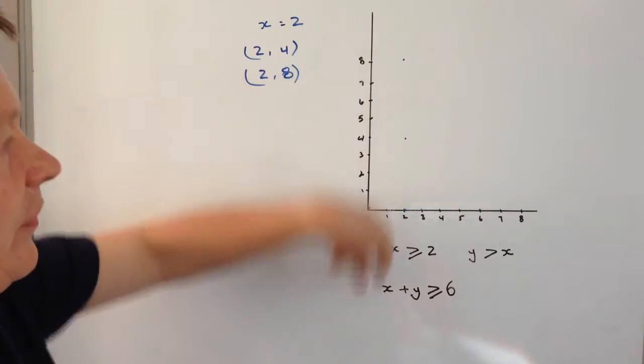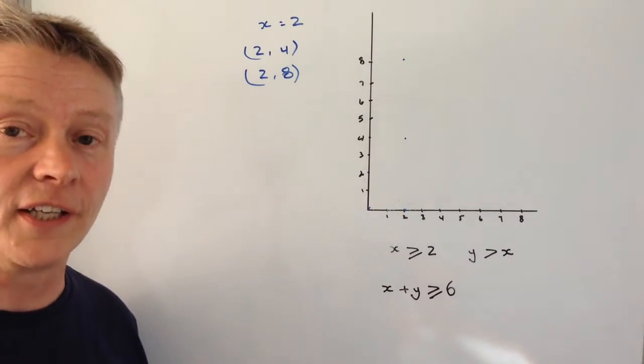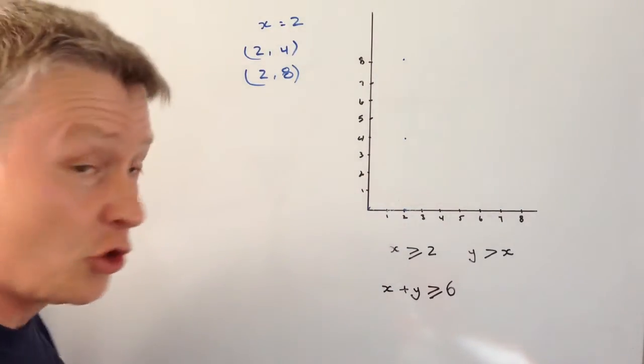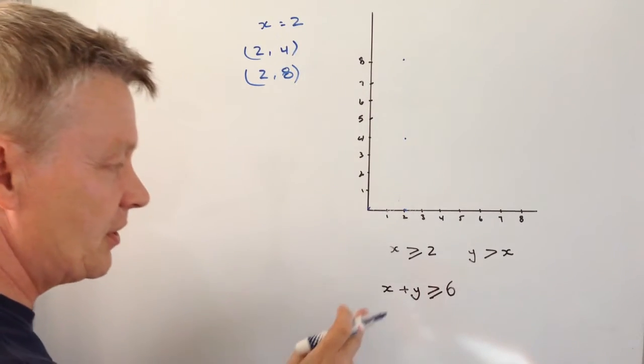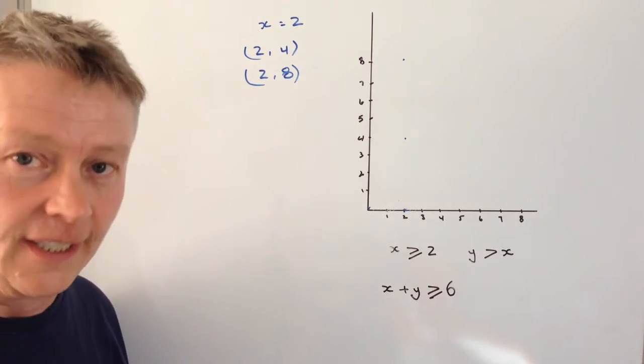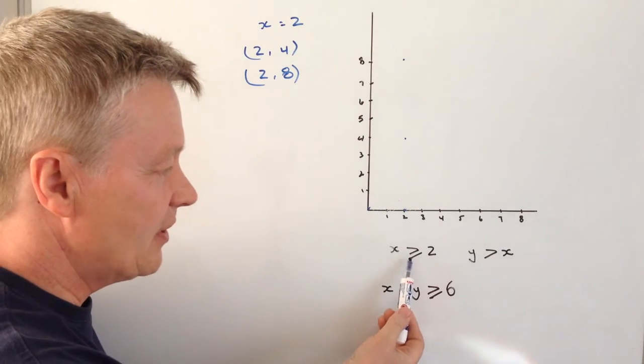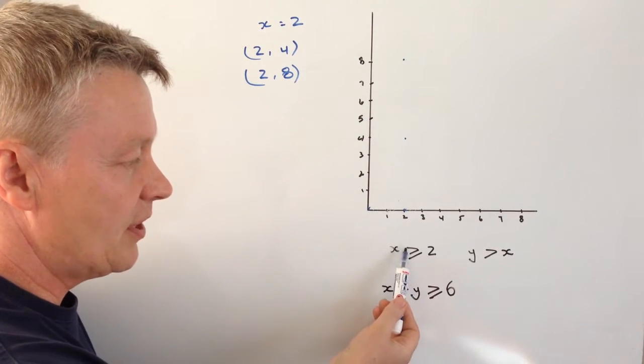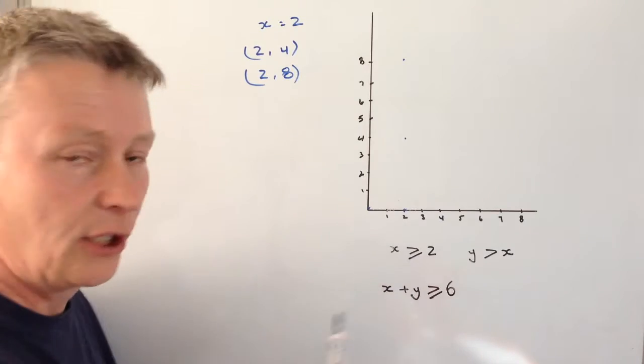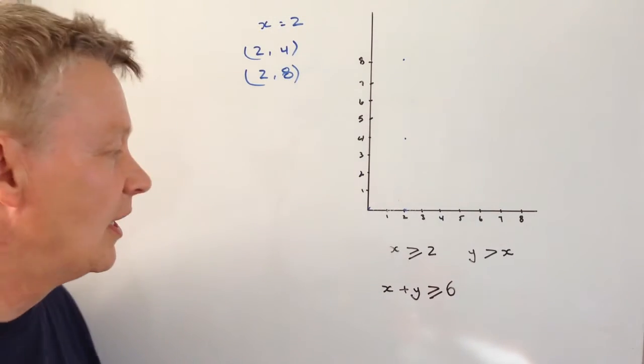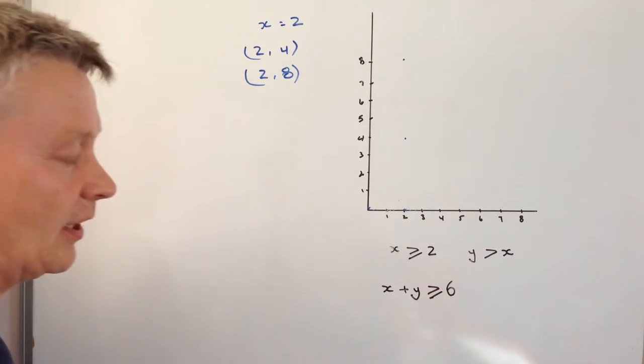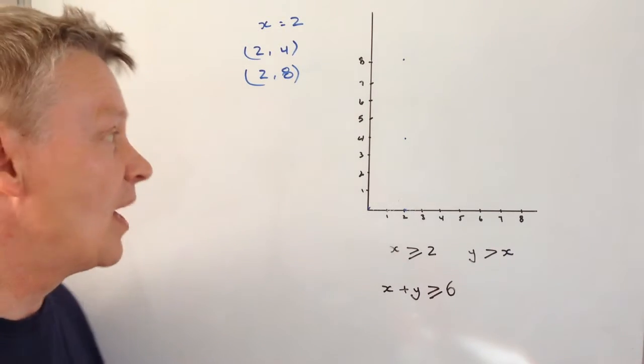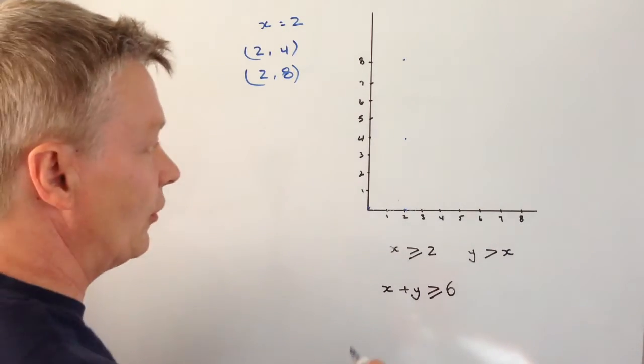So in other words along this line, this vertical line is where x equals 2. So let me just draw that up on the board. The thing I'm going to do also is I'm going to make it a solid line. Now the reason I'm going to do that is because it's equal to 2, so it's greater than or including 2. And the common convention is to draw that as a solid line as opposed to this one here which is going to be a dash.